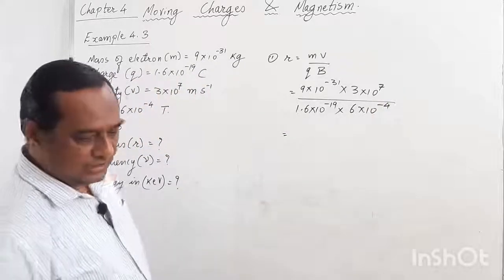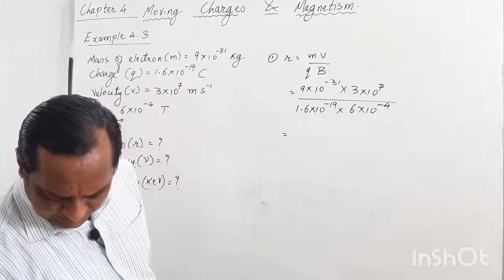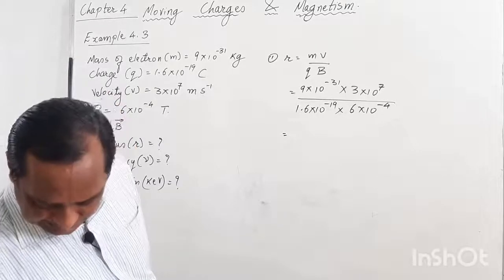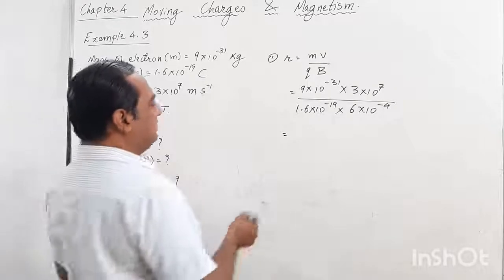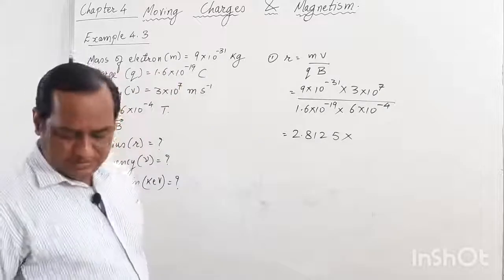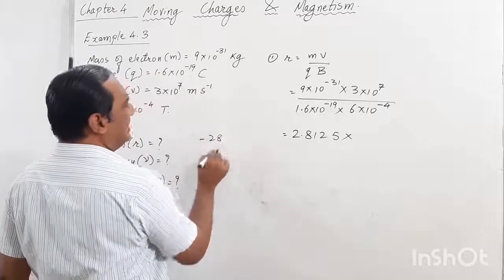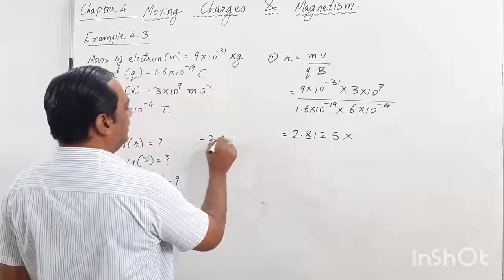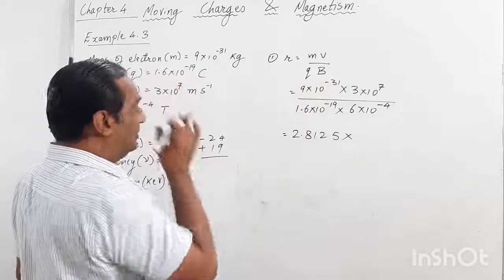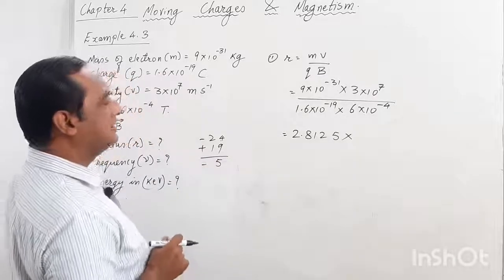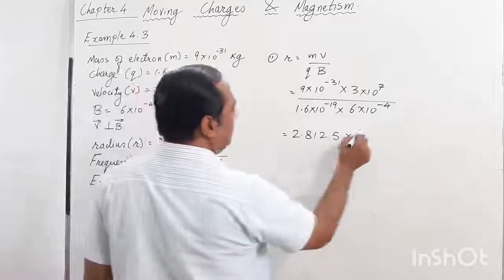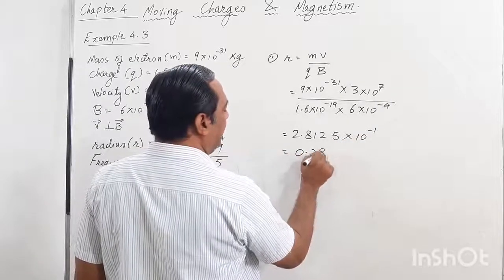Let me solve this. We have 9 multiplied by 3 divided by 1.6 divided by 6, which gives 2.8125. For the powers of 10: minus 31 plus 7 gives minus 24, then plus 19 gives minus 5, then plus 4 gives minus 1. So this is 2.8125×10⁻¹.